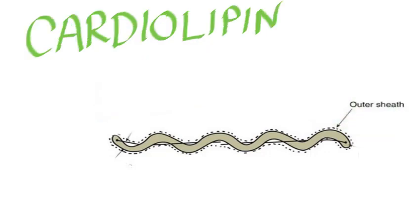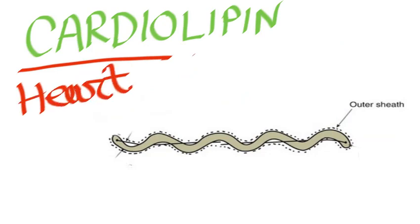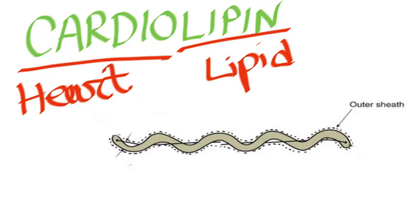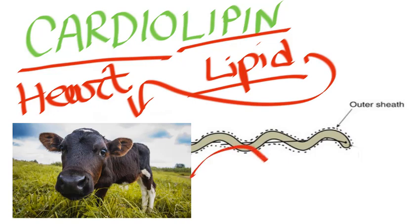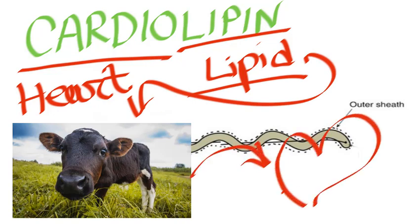Look at the word Cardiolipin — 'Cardio' means heart and 'Lipin' means lipid. Cardiolipin is a lipid found in mammalian tissue like beef heart. So it is present not only in Treponema but also in other eukaryotic tissue, that is why it is nonspecific, and this uniqueness has huge medical importance.